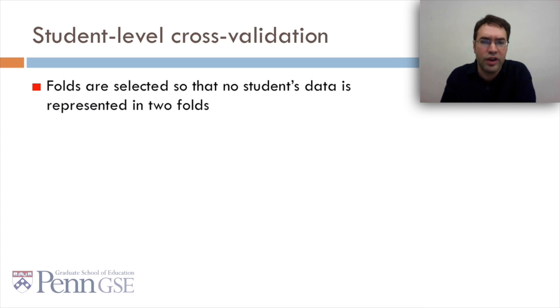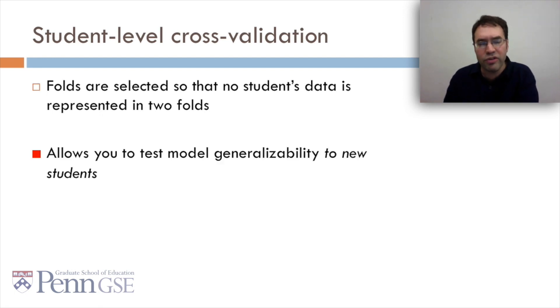Another variant is student-level cross-validation, where folds are selected so that no student's data is represented in two folds. In other words, a student is at any time either in a training fold or in a test fold. This allows you to test model generalizability to new students, which is often something we want.